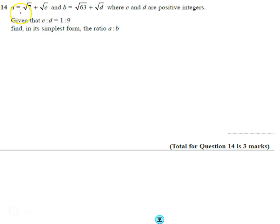So it gives us an expression for A and an expression for B, and it tells us that C and D, the bits in the expressions here, are in the ratio 1 to 9, and you find the ratio A to B.